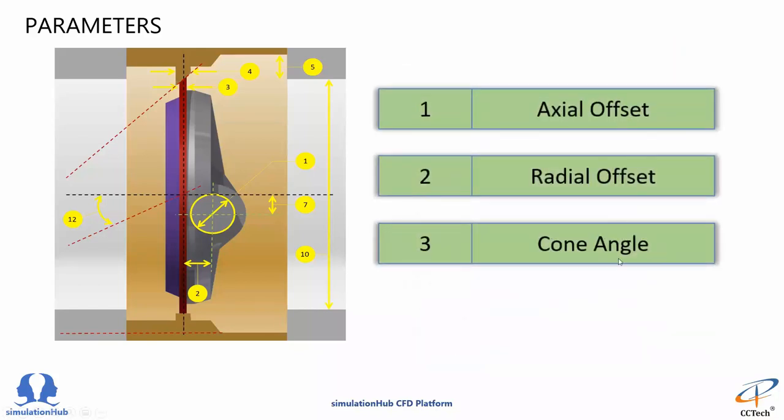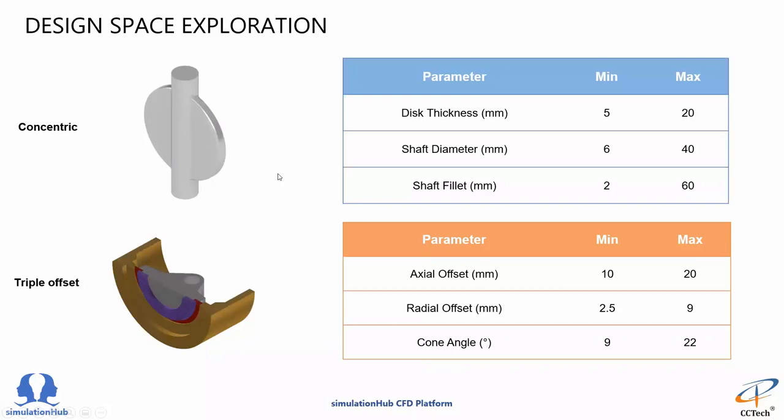For a triple offset valve, the three offsets are the highly influencing parameters for Cv. We were able to achieve results in just a month. So reducing the complexity always works. We did the same with concentric butterfly valve and chose these following parameters: the thickness, diameter and its fillet. As we wanted to predict Cv for any size of valve with the app, we added a fourth parameter that was the diameter of the valve, the size basically.